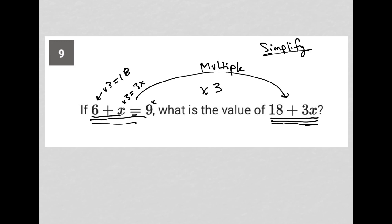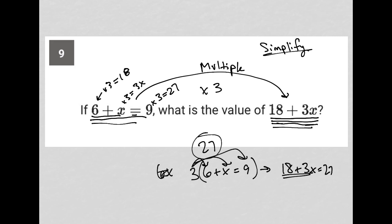So now I just have to multiply 9 times 3 to get 27, and that is my answer. So in essence, I have 6 plus x equals 9. If I multiply that entire thing by 3, I have 18 plus 3x equals 27. Again, distributing the 3 to each part of that equation. So that's why 18 plus 3x, which is what the question is asking for, is equal to 27.